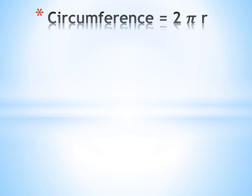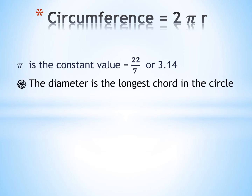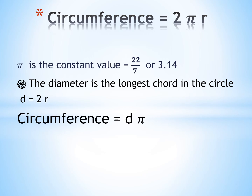You know r is the radius of the circle, but what is the meaning of a diameter? The diameter is the longest chord in the circle and is denoted by d small. The diameter equals 2r. So when I have a diameter, the circumference equals πd. I replace 2r with d because d equals 2r.